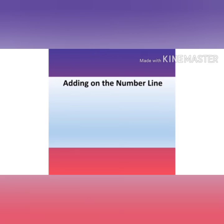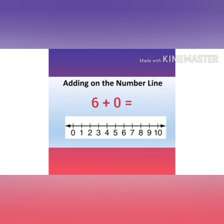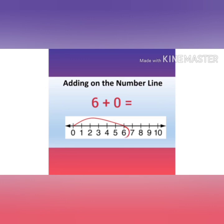Children, let's do one more question. The question is 6 plus 0 is equal to how much? So we will take a pencil to number 0 and take a big jump from 0 to number 6. Now, what is the next number? The next number is 0. So when we are adding 0 to any number, the answer will be the number itself. So we won't jump. So 6 plus 0, the answer will be 6. You always have to remember that whenever we add a number with 0, the answer will always be the number itself.